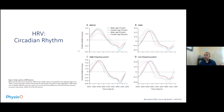There's also a circadian rhythm. For high and low frequency measures, there's a peak at 5 to 8 a.m. and a nadir around 7 to 8 p.m. Interestingly, the low frequency shows an earlier phase shift to the left for older people, though the reason for this is unclear.